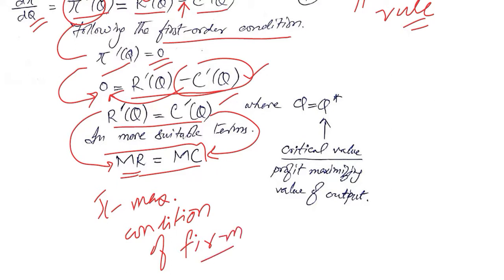When these two derivatives — marginal revenue and marginal cost — are equal, there will be a certain value of Q known as the critical value of Q, because at this value the profit of the firm will be maximized.